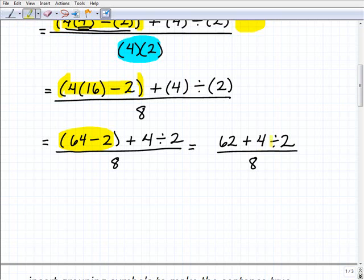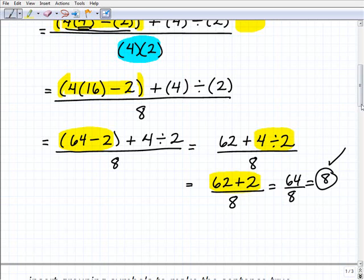Still focused on the numerator. I have addition and I have division, and I have to do division first. So now I have 62 plus 4 divided by 2, which is 2, all over 8. And now you can see that this actually was a pretty nice value that we're going to get here for our answer. 62 plus 2 is 64. 64 divided by 8 is 8. So that worked out nicely.